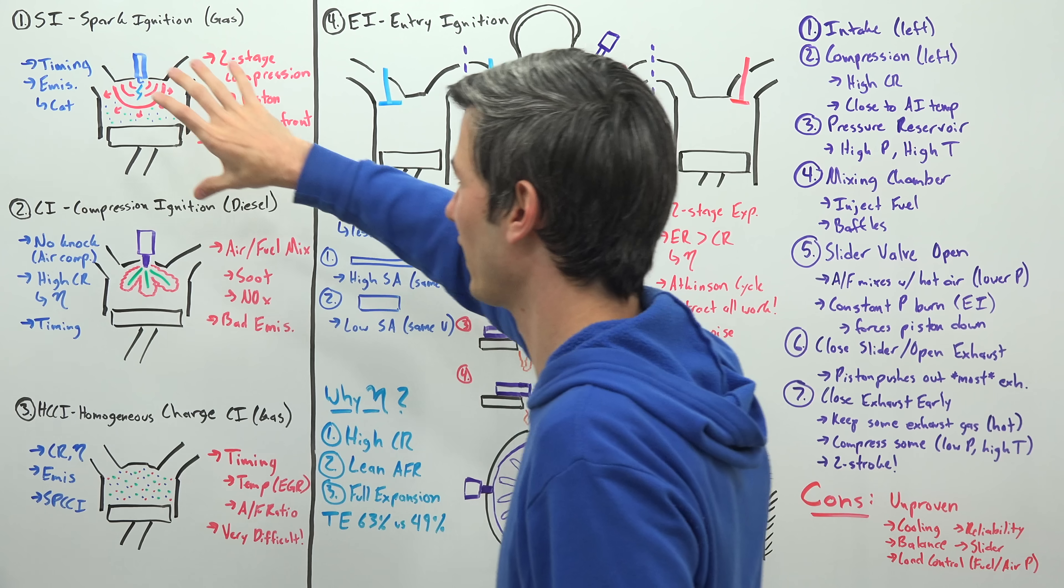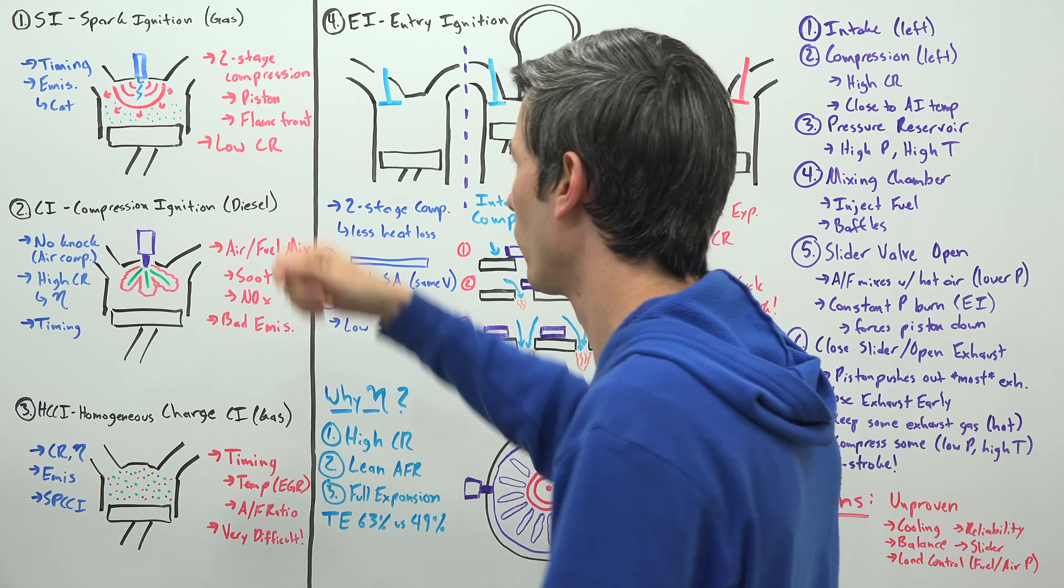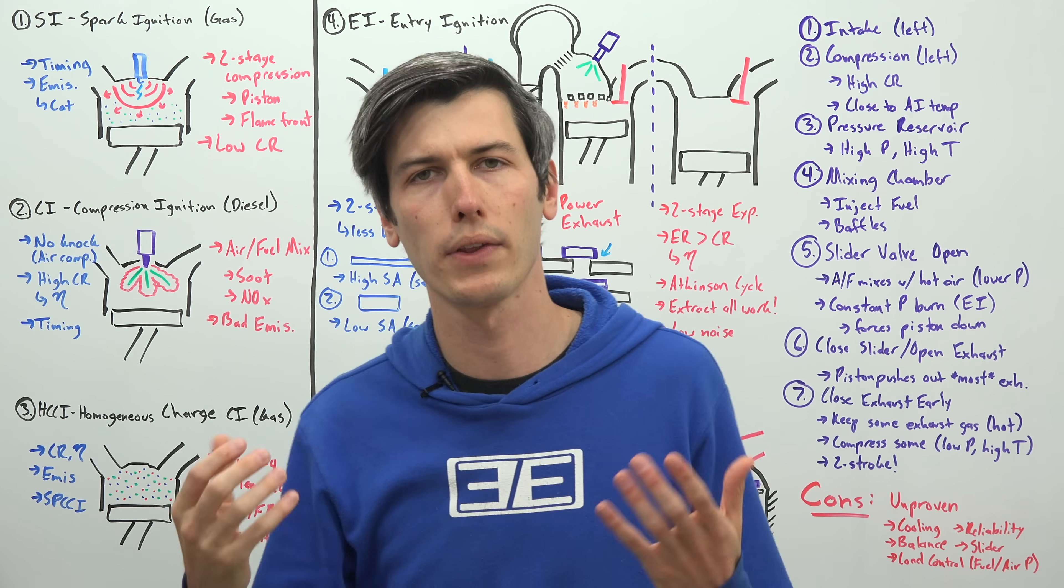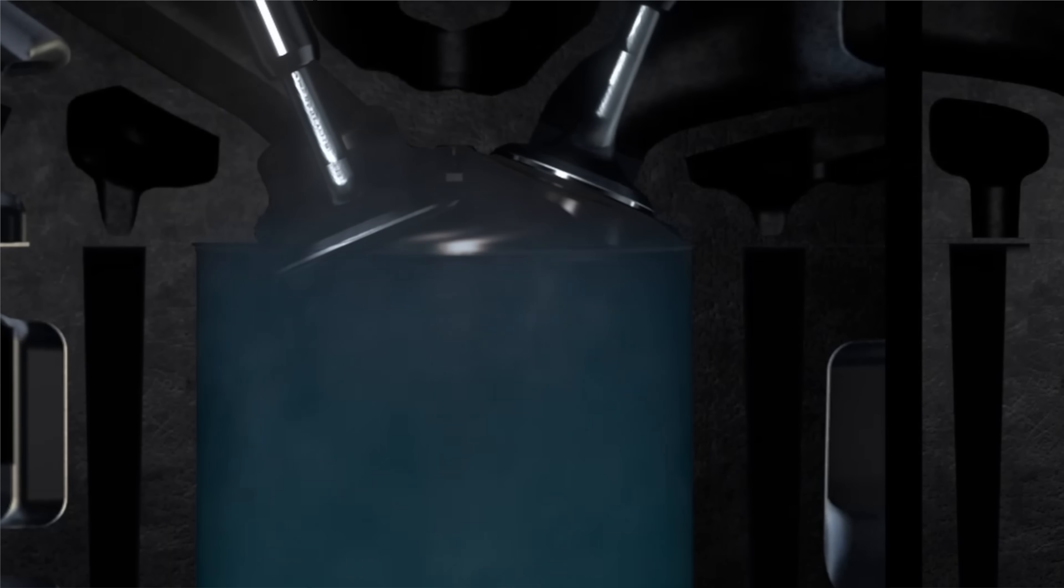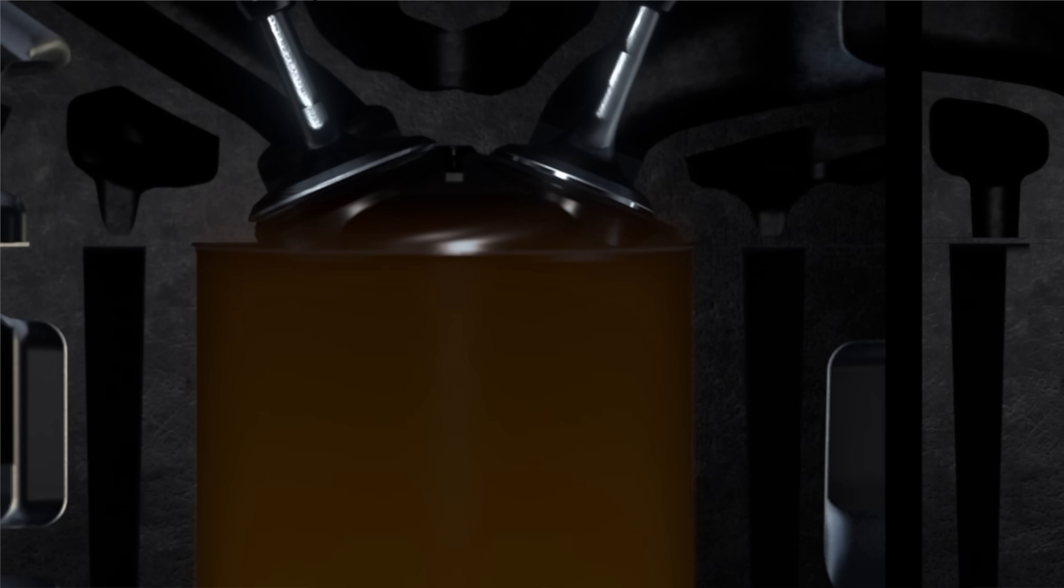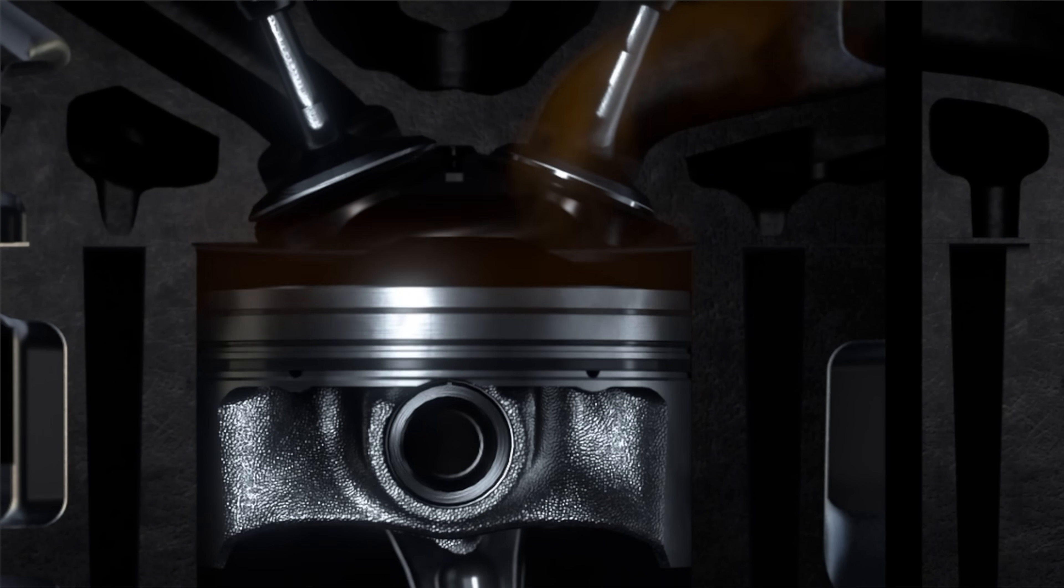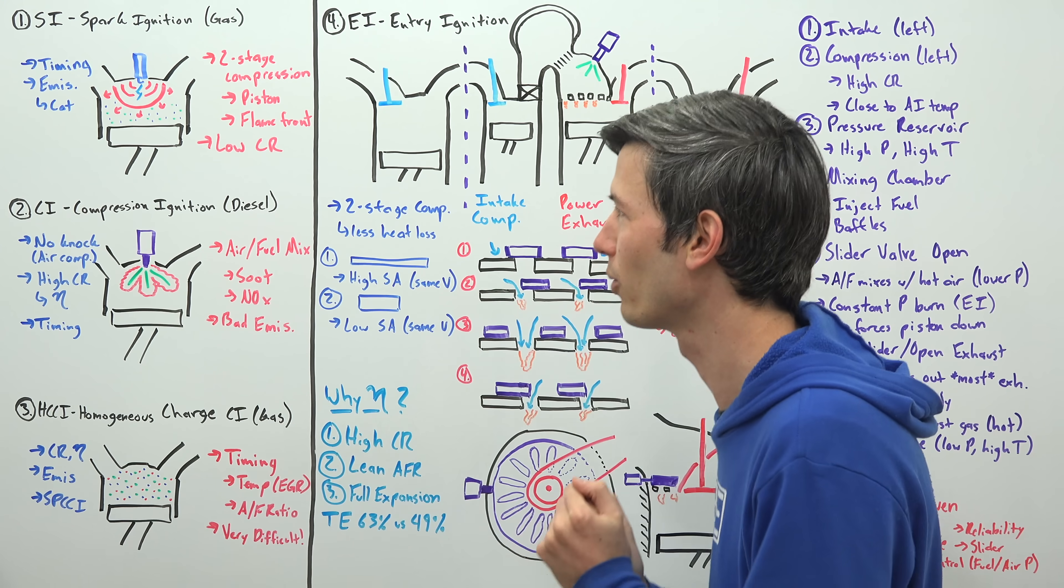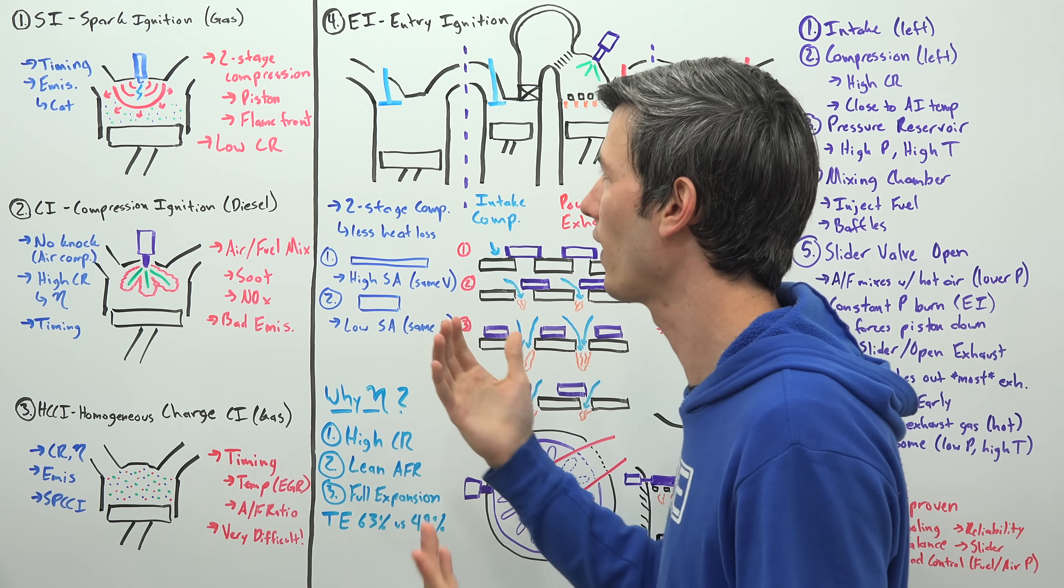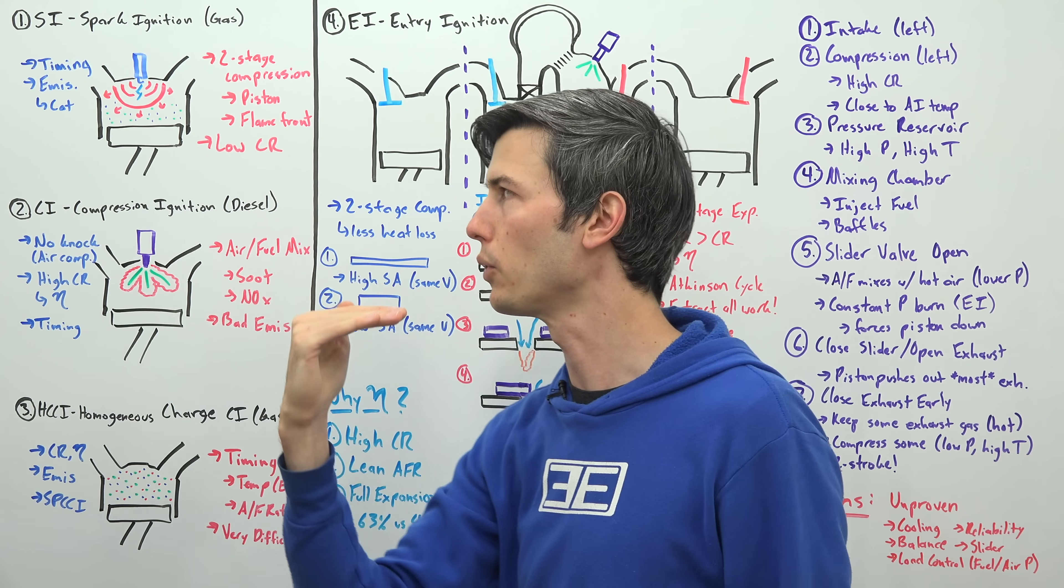So starting with spark ignition, our typical gasoline engine that uses a spark plug to ignite that air fuel mixture. What's the drawback with spark ignition? Well the drawback mainly is its efficiency and why isn't it that efficient? Well, it's not that efficient because it tends to have a low compression ratio. So why does it have a low compression ratio? Well, because it has two stages of compression.